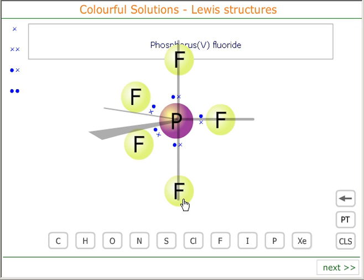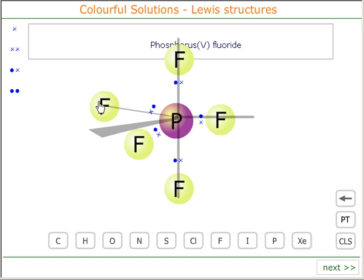Two of the Fluorines occupy axial sites, that's up and down from the Phosphorus. And the other 3 Fluorines adopt positions in what's called equatorial sites. These are sites that run in a trigonal plane around the central atom.